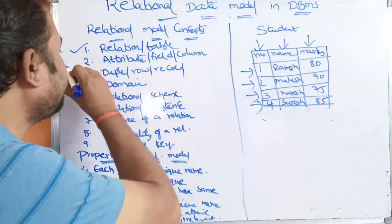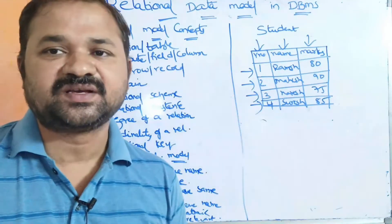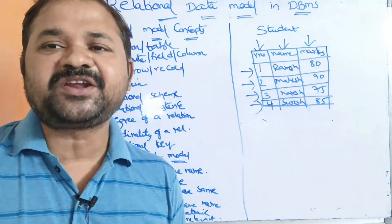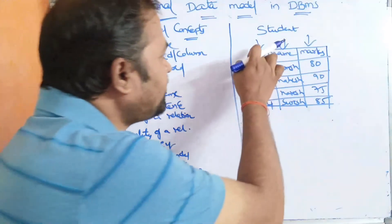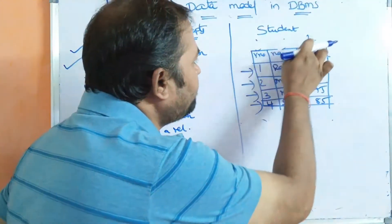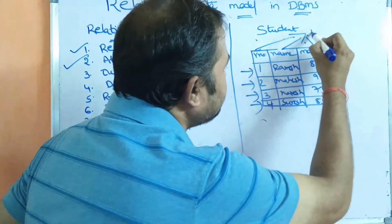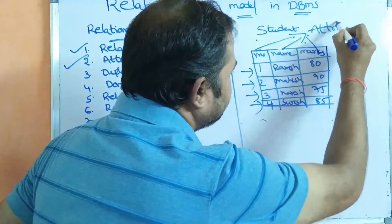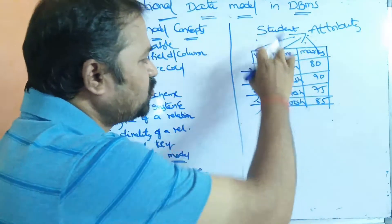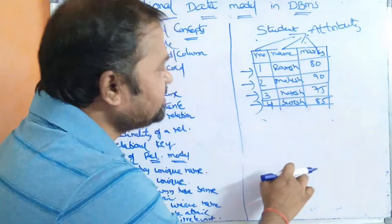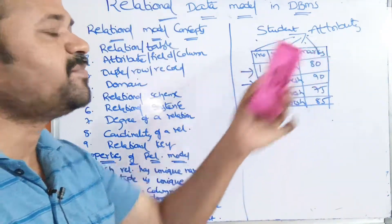Now let us see the next terminology. Attributes or fields are columns — attributes are nothing but the column names of the table. Here the column names are: roll number, name, and marks. So these are the attributes, also called fields. Roll number is one field, name is another field, and marks is another field.